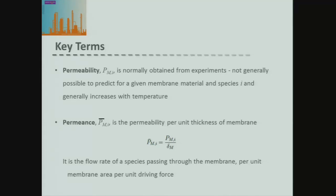A more useful measure is potentially the permeance — that's the permeability of our membrane per unit thickness of the membrane. It's essentially the flow rate of the species passing through the membrane per unit area of the membrane per unit driving force. The driving force depends on whether it's a liquid or a gas. For a liquid, it's generally the difference in concentration of the species on the permeate and retentate sides. For a gas, it's generally the partial pressure difference between the two sides.